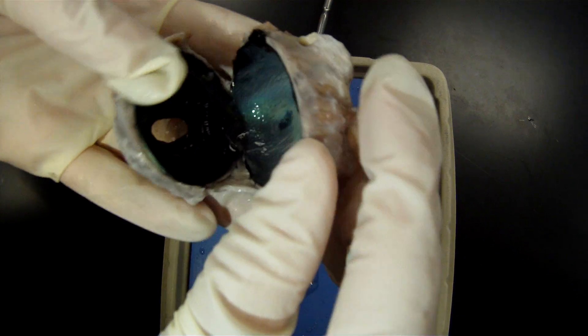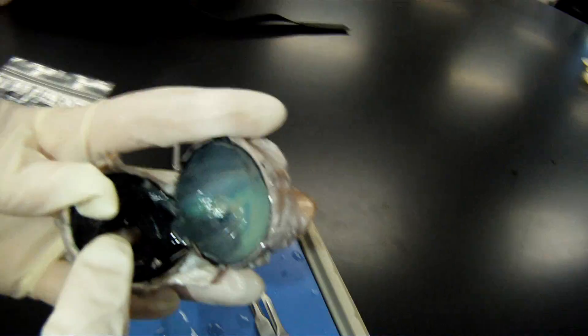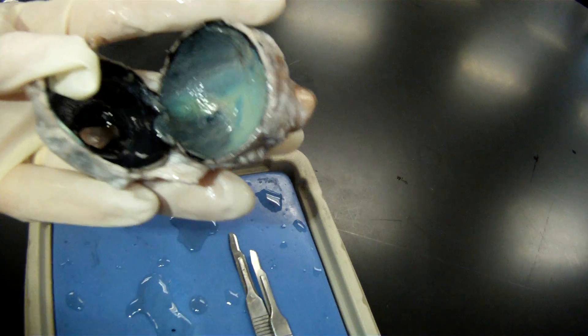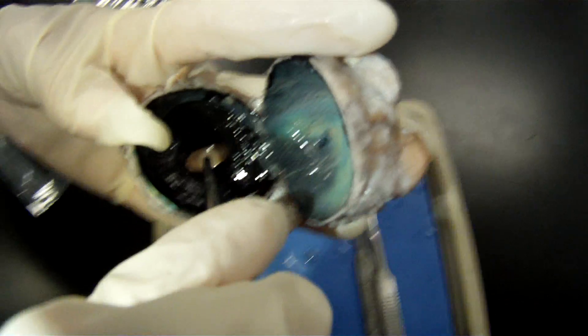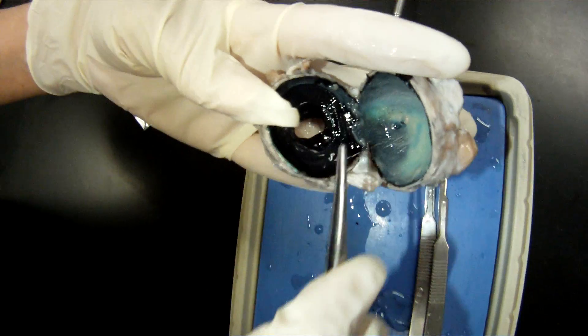Making a coronal incision, exposing the interior of the eye, the anterior chamber and posterior chamber. Anterior chamber is in there.